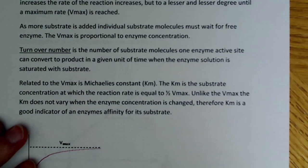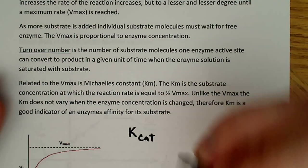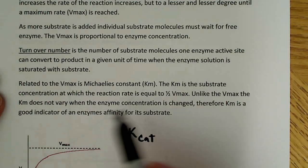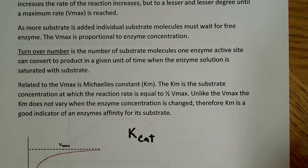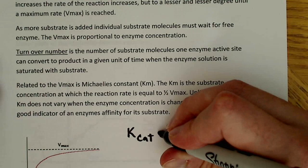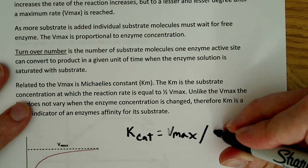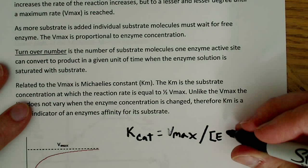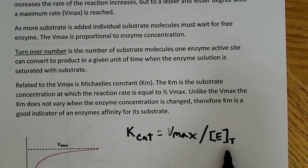The next thing I want to talk about is what's known as the turnover number, also listed as Kcat. The turnover number is the number of substrate molecules one enzyme active site can convert to product in a given unit of time when the enzyme solution is saturated with substrate. This is a measure of how many molecules of substrate can be converted to product by a single active site. Kcat can be calculated as Vmax over the total concentration of enzyme — sometimes called ET or ETOT.